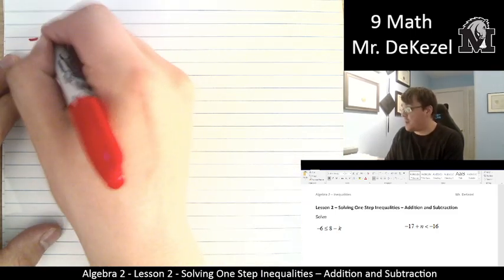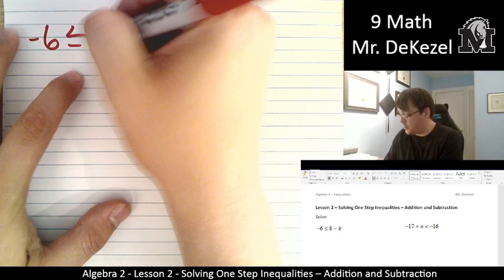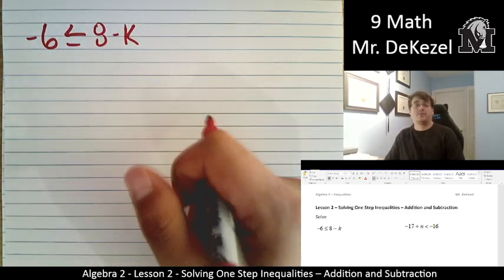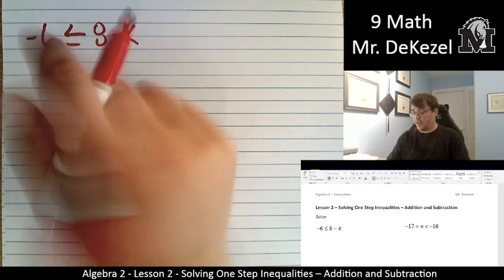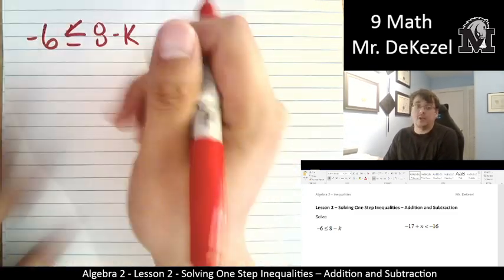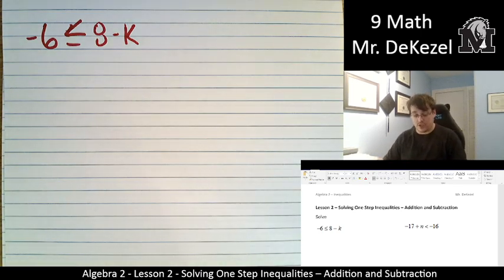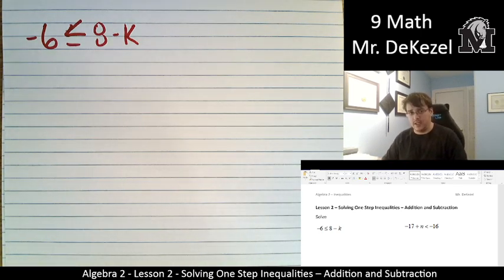Our first question is -6 ≤ 8 - k. And remember that solving is isolating for our variable. What we're going to do is treat our inequality sign a lot like an equal sign for these problems. For addition and subtraction, we treat it pretty much just like an equal sign.